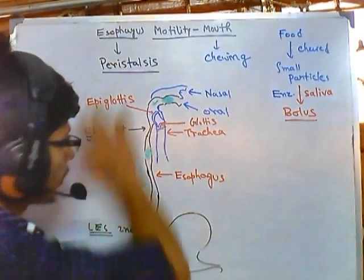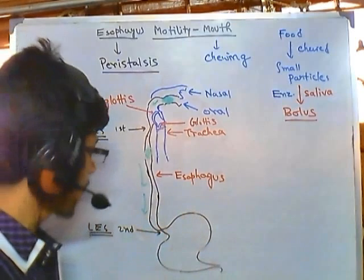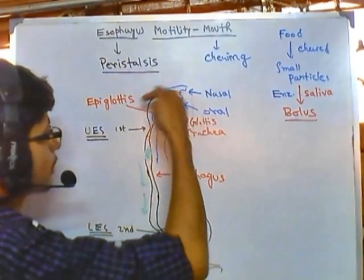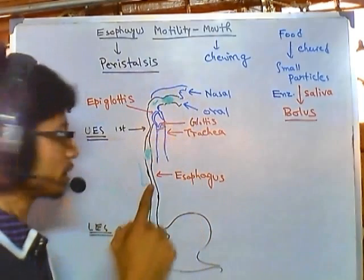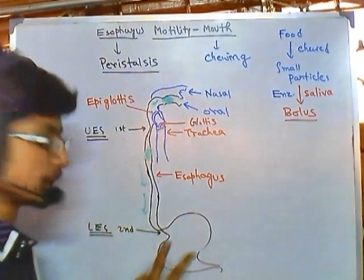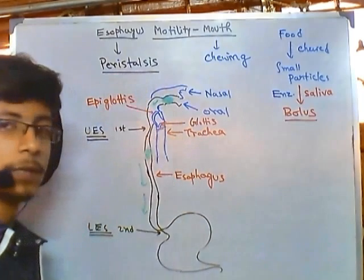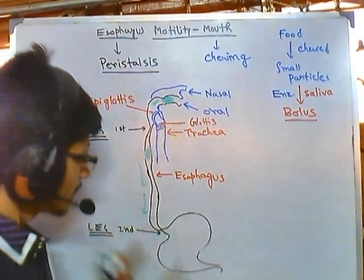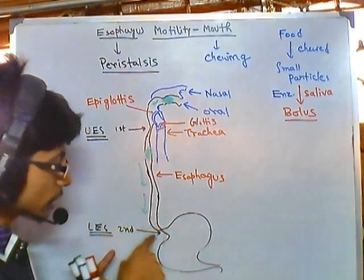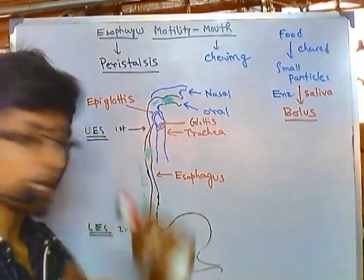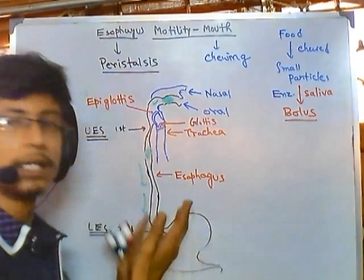You can look at the previous video first then come back to see this one. We studied that the bolus moves through the esophagus through two different constrictions: the upper esophageal sphincter and then the lower esophageal sphincter. As the bolus moves through peristalsis — muscle contraction and relaxation — it finally reaches the lower esophageal sphincter, which is the junction of the esophagus and stomach, and then passes into the stomach.